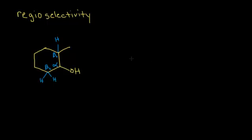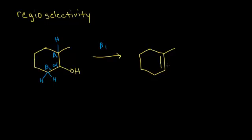Let's draw two different reactions. If we react this with sulfuric acid and heat using the hydrogen from the beta 1 position, the double bond forms between the alpha and the beta carbon. The OH leaves, and we form a double bond between the alpha and beta 1 carbon — that's one possible product. Now let's look at what would happen if the reaction proceeded via the beta 2 carbon.